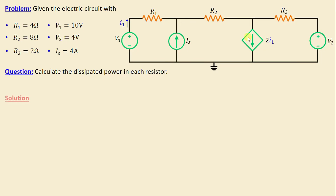Let's move on to the solution. First, let's begin by defining the number of meshes in this network. It's evident that there are three meshes: mesh number 1, mesh number 2, and mesh number 3.